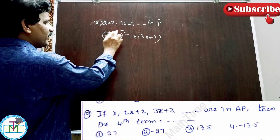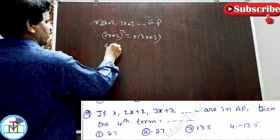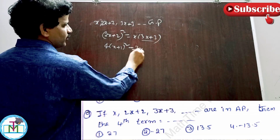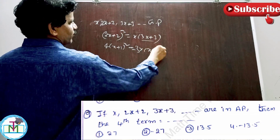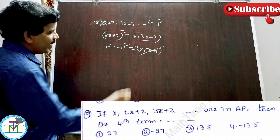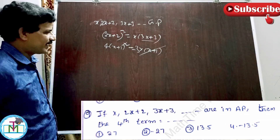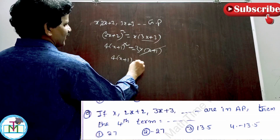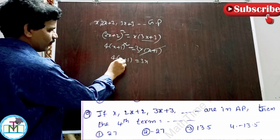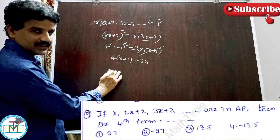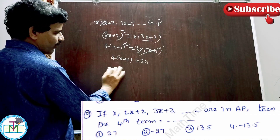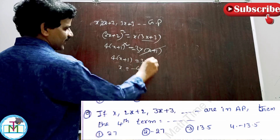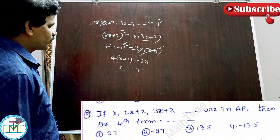Cancel (x+1) from both sides: 4(x+1) equals 3x. So 4x plus 4 equals 3x, giving 4x minus 3x equals minus 4, therefore x equals minus 4. The first term A equals x equals minus 4. The second term AR equals 2x plus 2 equals 2(minus 4) plus 2 equals minus 8 plus 2 equals minus 6.